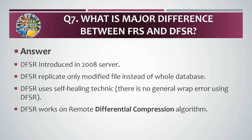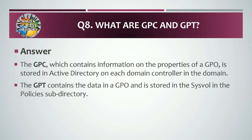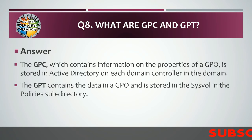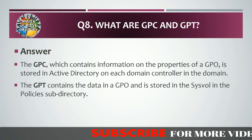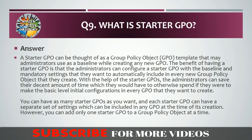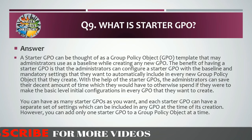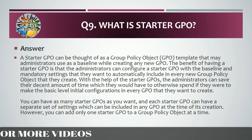Question number eight: what are GPC and GPT? Answer: The GPC, which contains information on the properties of a GPO, is stored in Active Directory on each domain controller in the domain. The GPT contains the actual data in a GPO and is stored in the SYSVOL in the Policies subdirectory.